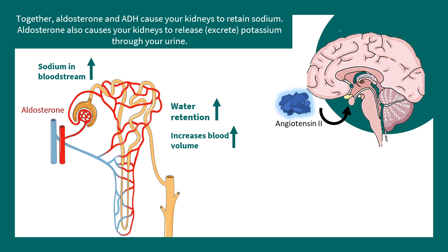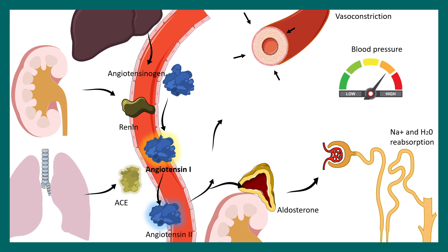Angiotensin-2 further acts on the pituitary gland, which leads to the secretion of antidiuretic hormone. Antidiuretic hormone further helps in water reabsorption and ultimately retains water, increasing blood volume. All of this system is dedicated to bringing blood pressure back to a homeostatic level — it is a safeguard mechanism in our body.